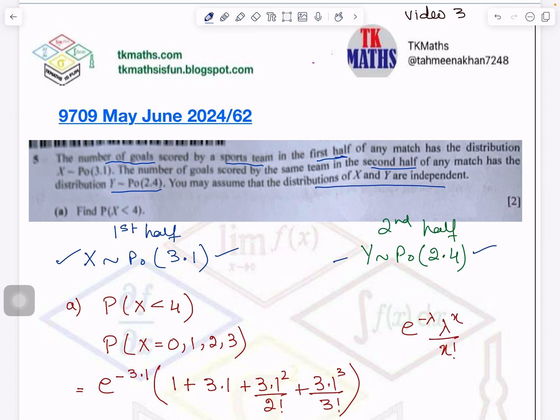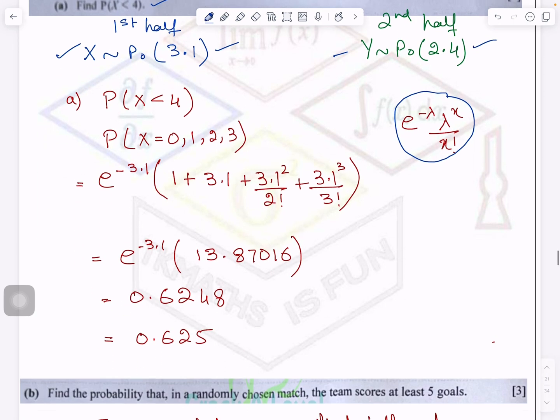X and y are independent and you have to find a probability of x less than 4. We know when it is less than 4 we have to calculate x is equal to 0, 1, 2, 3. So simply I am applying the Poisson formula and getting the probability.